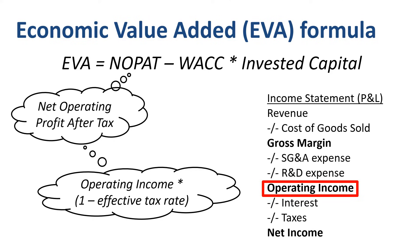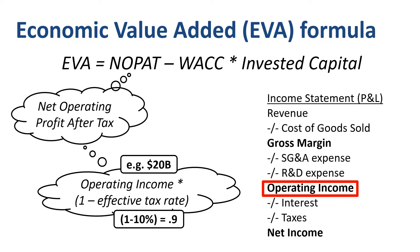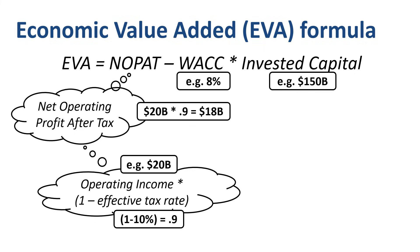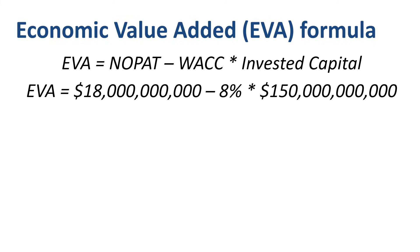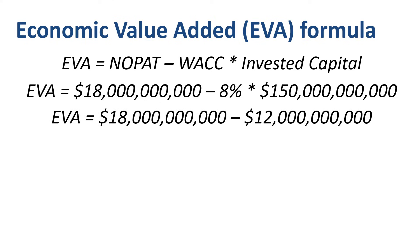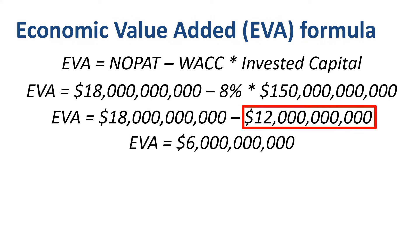If a company has an operating income of $20 billion and an effective tax rate of only 10% — low, but certainly possible — then NOPAT is $20 billion times 0.9, which equals $18 billion. If the company's WACC is 8% and its invested capital is $150 billion, we can fill in the EVA formula: $18 billion minus 8% times $150 billion equals $18 billion minus $12 billion, so $6 billion. Due to the capital charge of $12 billion, NOPAT of $18 billion shrinks to an EVA of $6 billion — the economic profit left over when adjusting for the cost of capital.